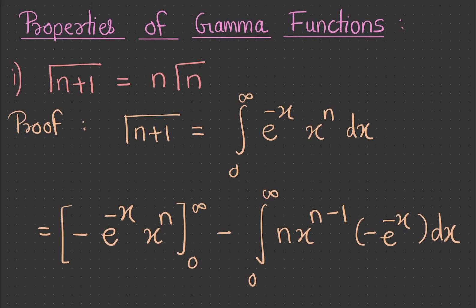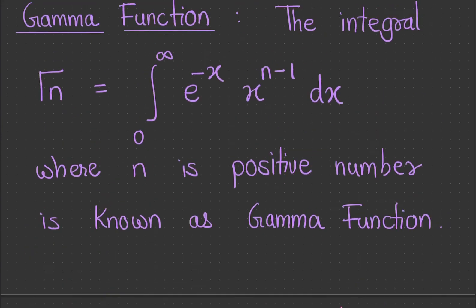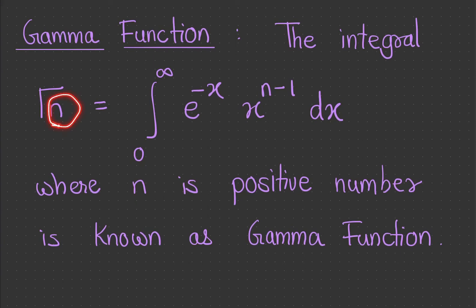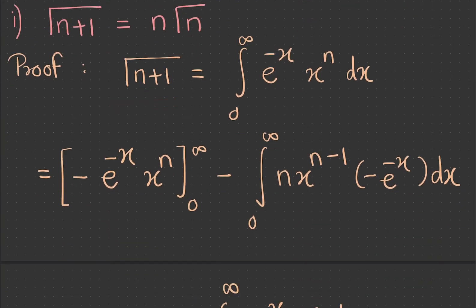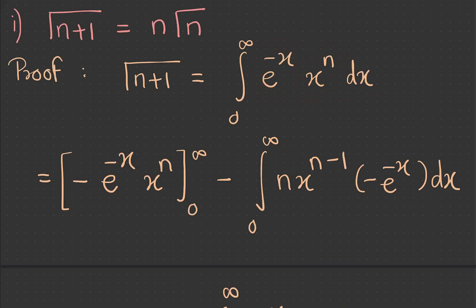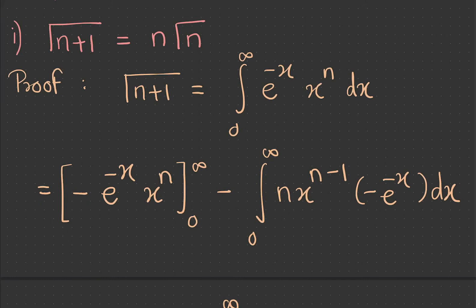The first property of the gamma function is: gamma of n plus 1 equals n into gamma n. To prove this, by definition, gamma of n plus 1 equals the integral from 0 to infinity of e raise to minus x into x raise to n dx — we simply replace n by n plus 1, so n plus 1 minus 1 gives n.